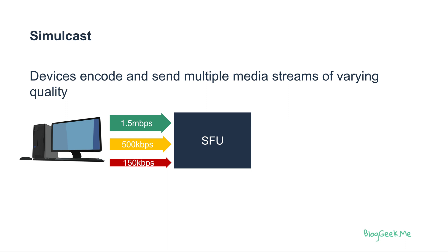Each device is going to encode and send multiple media streams of varying quality. Usually we'll have two or three such streams going towards the server, each in a different bitrate. In each bitrate we'll have different resolutions, framerate, and quality.